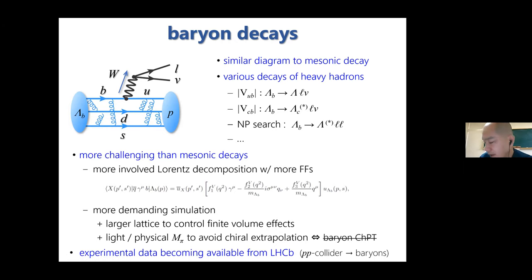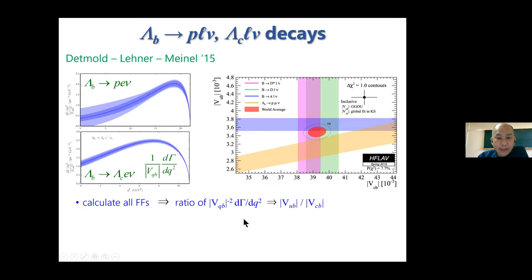Baryonic LQCD is known to have poor convergence in the chiral expansion, so it has disparate capability compared to mesonic decays. I also note that experimental data is becoming available from LHCb because this proton-proton collider produces many various B baryons at once by high energy collision of protons. Here's an example for Lambda_b → pℓν and Lambda_c ℓν decays.